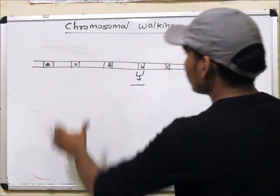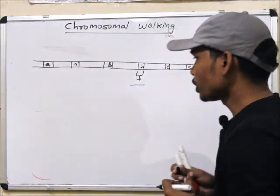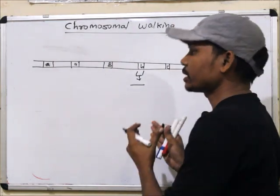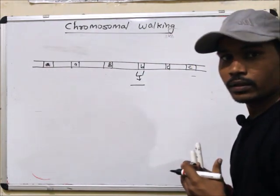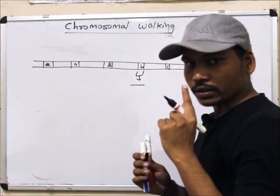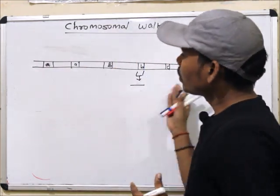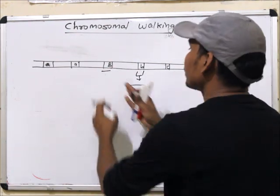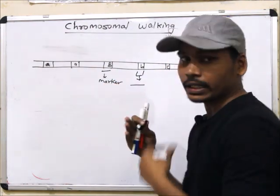How is this process completed — what techniques, what rules, what manner will be required? First, in chromosomal walking, you isolate the DNA sequences from cells, either plant or animal. You also need to know a marker. What is a marker? A marker is a known sequence. We need to know a portion of the chromosomal sequence, and that known sequence is called the marker.